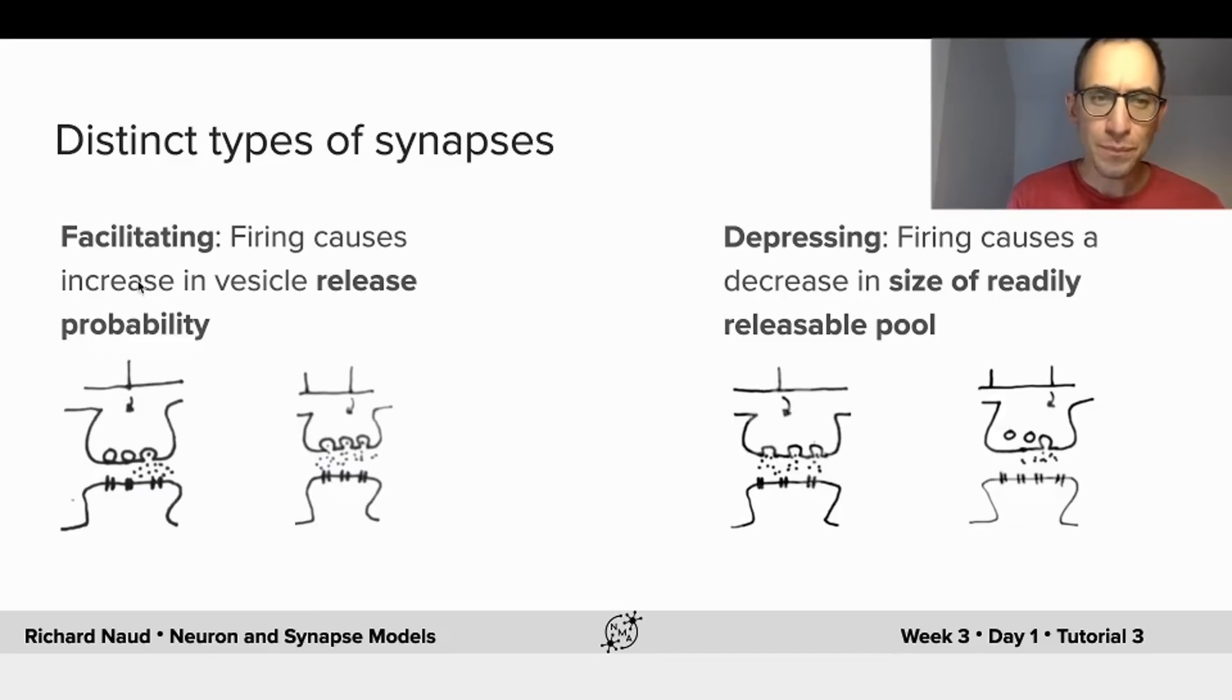For facilitation, a firing can cause an increase in the release probability of the vesicles, meaning that when an isolated spike comes, the release probability is low, and maybe only one vesicle is releasing. Now, when another spike comes shortly after, the probability of releasing those vesicles has increased, meaning that all vesicles are releasing their content, releasing much more glutamate, and that creates a bigger effect on the postsynaptic side.